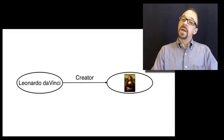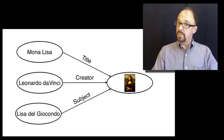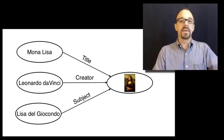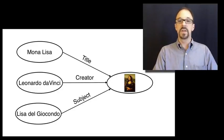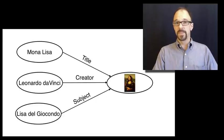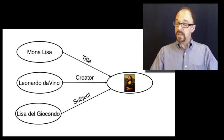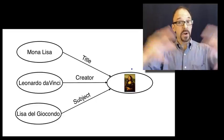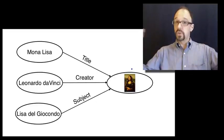And these can get as complex as you want. The title is the Mona Lisa. The subject is Lisa del Giocondo, who supposedly was the woman who sat for that painting. The format is oil paint on poplar wood. The date of creation is 1503, etc. And this can get even more complicated because you can have, for example, an entire network of triples.